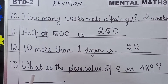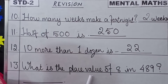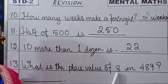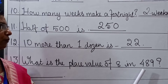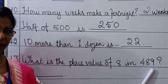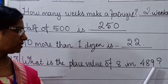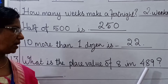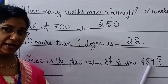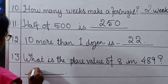Coming to the 13th question: What is the place value of 8 in 489? You know the place value children — 1s, 10s, 100s. So 8 is in the 10s place. Here comes 8, so 8 tens.